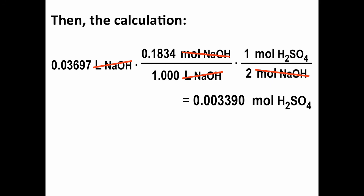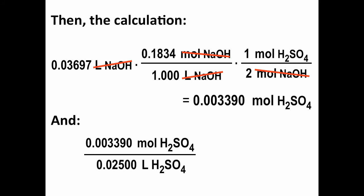Now, we're not done yet. The problem asked for the concentration, or molarity, of the sulfuric acid solution. So what we do next is we remember that molarity is moles per liter, moles of H2SO4 in, in this case, 25 milliliters, or 0.02500 liters, of H2SO4 solution. And when we do that calculation, we get 0.1356 moles per liter, or we often write it 0.1356 molar, capital M, H2SO4. So that problem has been solved.